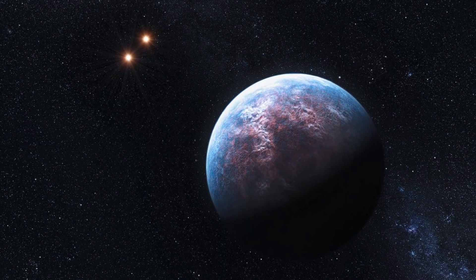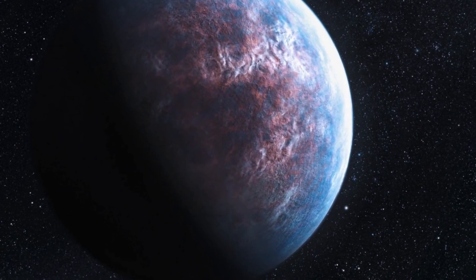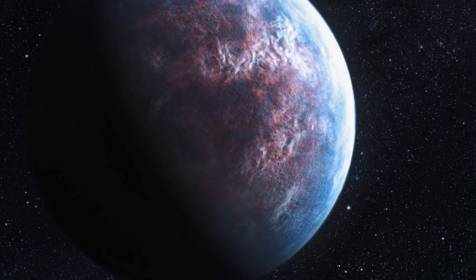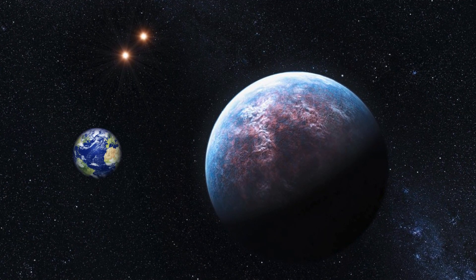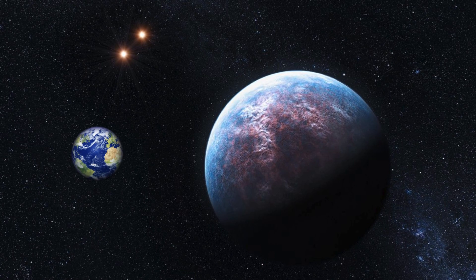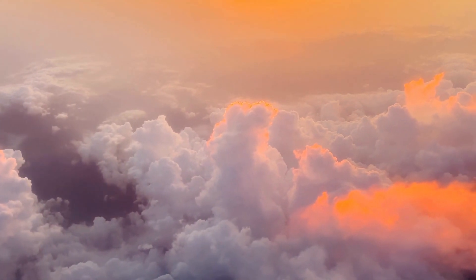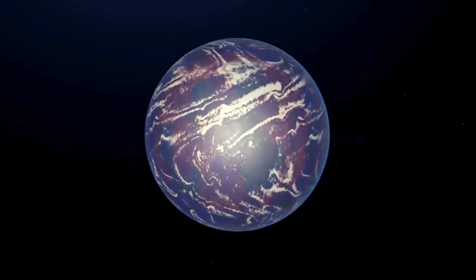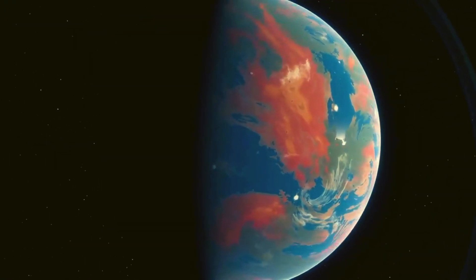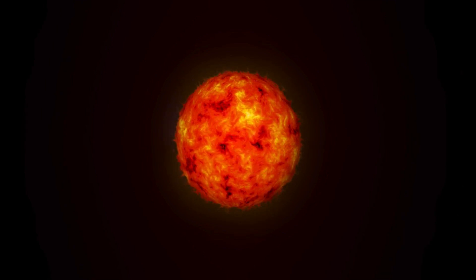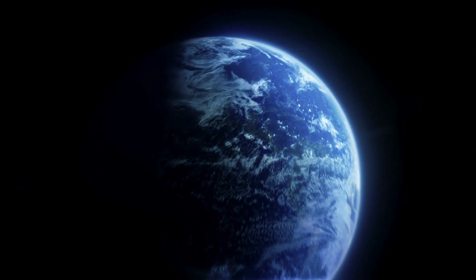The nearest planet to the star, GJ 667Cb, sizzles at a scorching 200 degrees Celsius (392 degrees Fahrenheit). As the most massive in the system, approximately 5.5 times the mass of Earth, this exoplanet likely sports a thick atmosphere and completes an orbit around its host star in just seven days. However, the real gems of the GJ 667 system are its three potentially habitable planets, situated farther from their host star, with masses ranging from 1 to 5 times that of Earth, making them prime candidates for habitability.